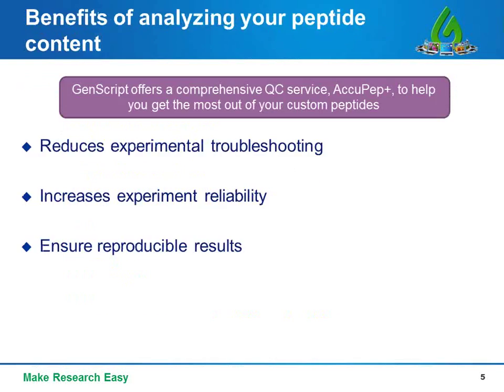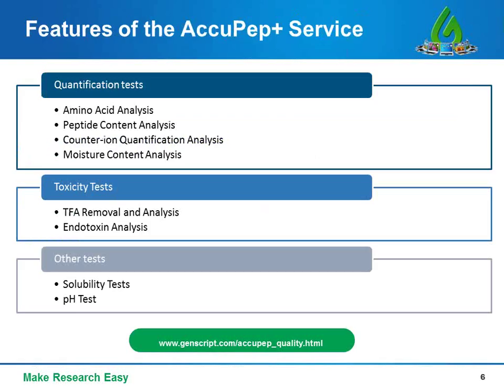Here at GenScript we provide a portfolio of resources called AcuPepQC, aimed at comprehensively examining the components of your peptide sample. By knowing all the possible components, you can reduce experimental troubleshooting, increase experiment reliability, and ensure reproducible results. The three main features of the AcuPepQC service are quantification tests, toxicity tests, and other tests such as solubility and pH tests.